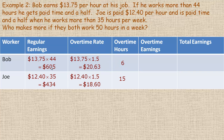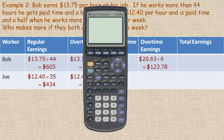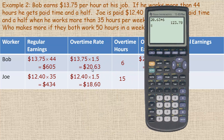There's quite a difference in regular earnings: $605 for Bob compared to $434 for Joe. Bob's overtime earnings are $20.63 times 6 hours = $123.78. Note that 13.75 times 1.5 equals 20.625, which rounds to $20.63 — since we're dealing with money, we round to the nearest cent.